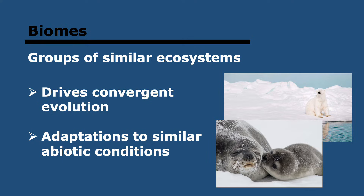A biome is a group of ecosystems which are similar to each other because they have similar abiotic conditions — abiotic factors being the non-living things like rocks and water. Because they have similar abiotic conditions, they have similar communities and similar organisms living in them. Therefore, plants and animals evolve similar adaptations in response to those conditions, which is an example of convergent evolution.